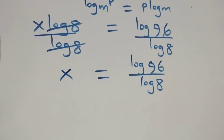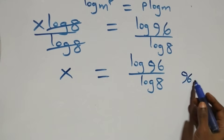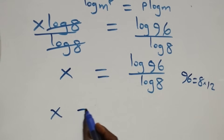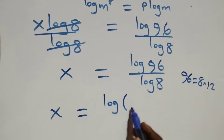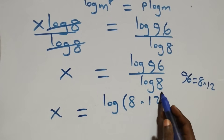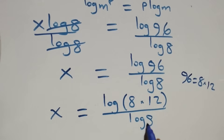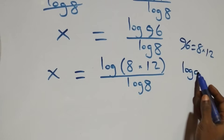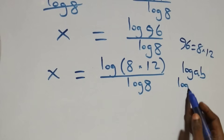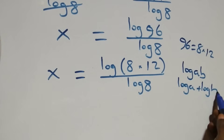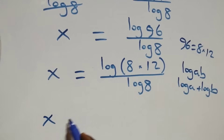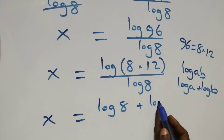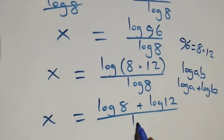We can write 96 as 8 times 12, so x equals log(8 × 12) over log 8. Applying the logarithm product rule — log(a × b) equals log a plus log b — this becomes x equals (log 8 + log 12) over log 8.